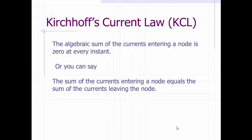Now let's look at Kirchhoff's current law. Kirchhoff's current law is defined as the algebraic sum of the currents entering a node is zero at every instant. Or you can say the sum of the current entering a node equals the sum of the currents leaving the node.